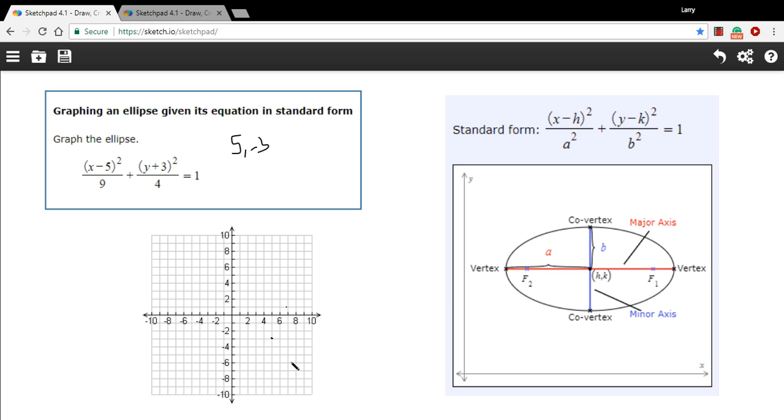Now if this were a circle, all you'd need is a radius and you could go ahead and graph that. An ellipse is a little bit more complicated. And over here, this shows what they call some of these parts. Because an ellipse is more squished one way than another, it has two what are called axes, a major axis and a minor axis.